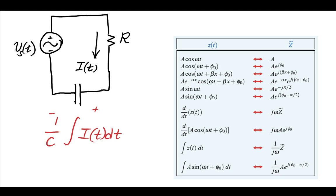As another quick example, let's return to the circuit we initially looked at that had a capacitor. From your circuits class, you should remember that we could get the voltage across this capacitor by doing this integral.